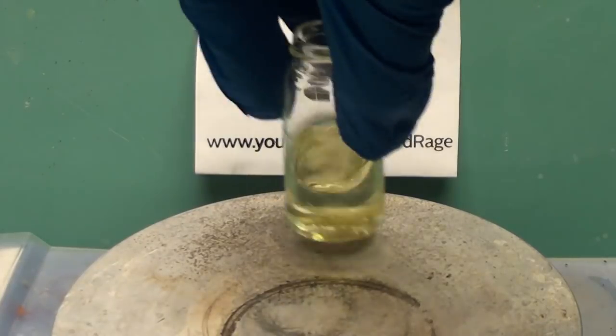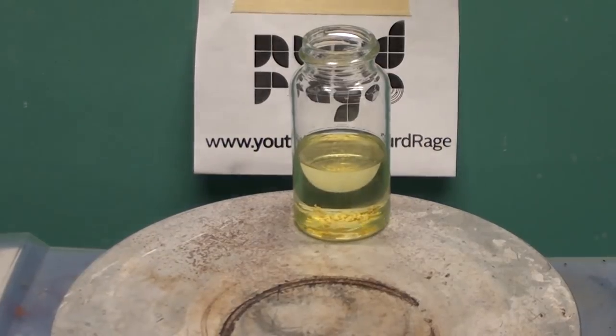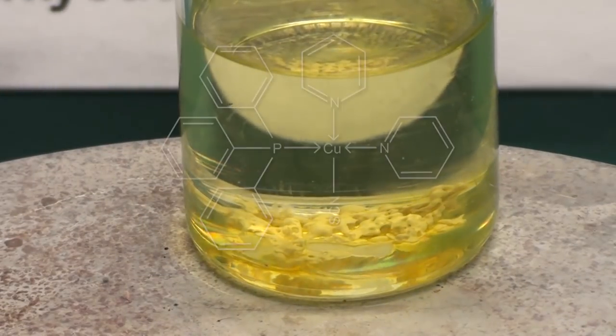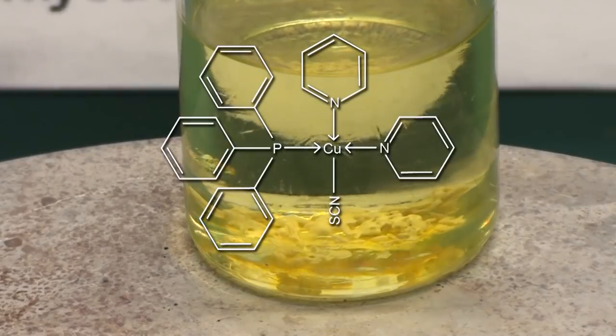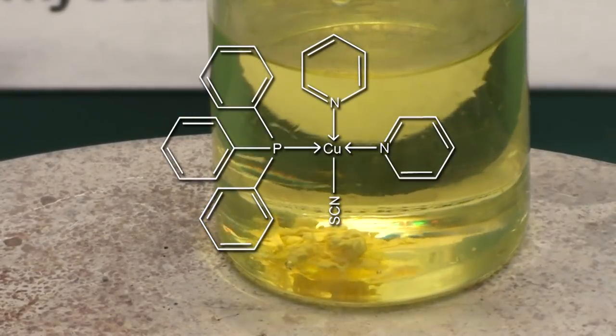Shake it up and then gently heat it with occasional shaking until everything is dissolved. What we're making is a coordination complex with copper in the center surrounded by two pyridines, a triphenylphosphine and a thiocyanate ligand.